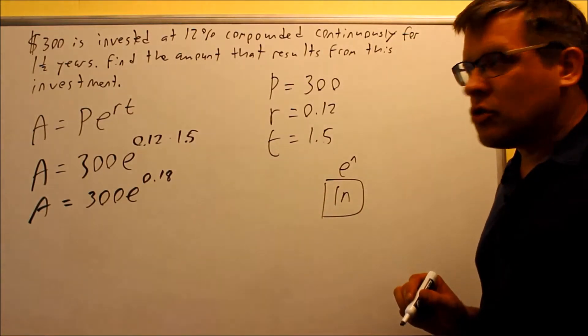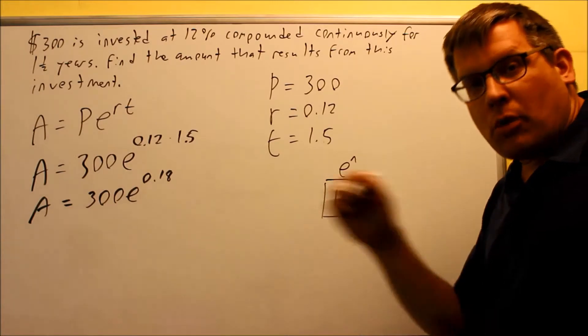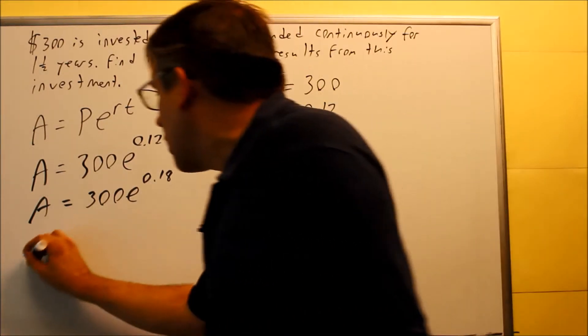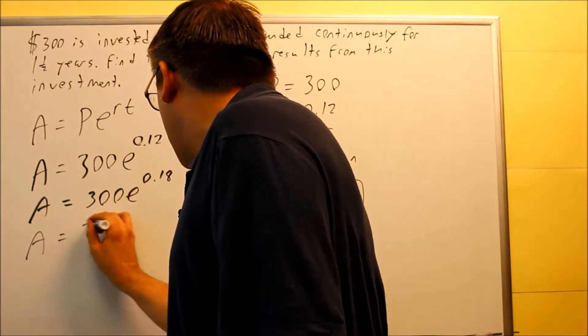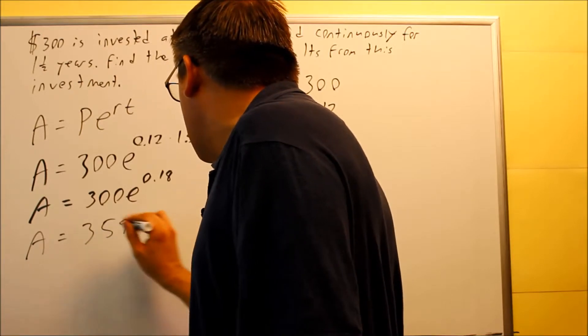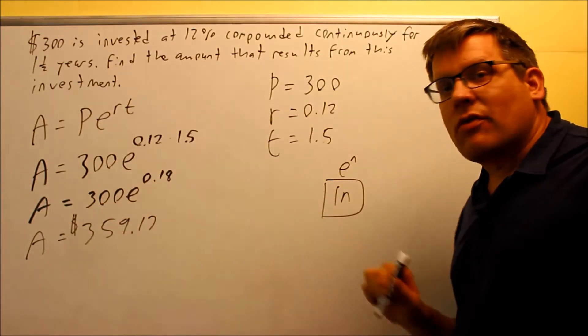So what you would do is you would do E raised to the 0.18 and then multiply by 300. Now if you do all that with a calculator, your final result you should get will be $359.17.